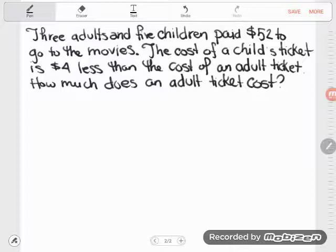Okay, so once again, how do I know that this is an algebra problem? The reason why I know is because I keep having mysteries. Like I see the cost of a child's ticket is $4 less than the cost of an adult ticket. It's being compared to an adult ticket.